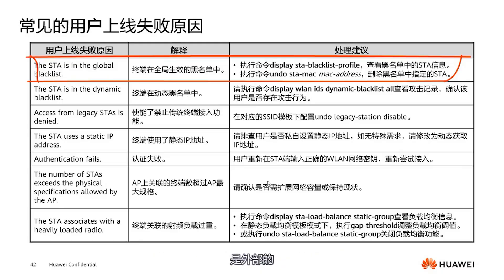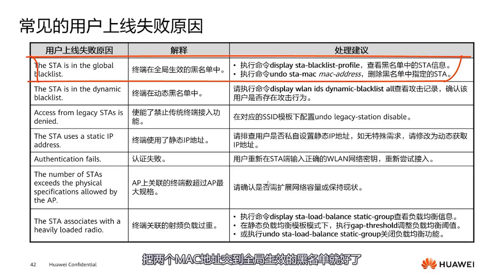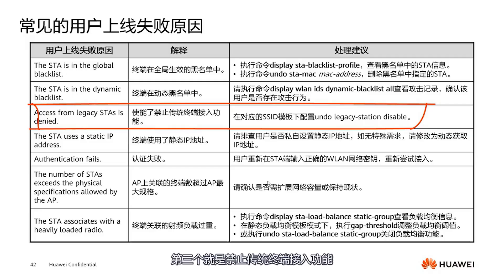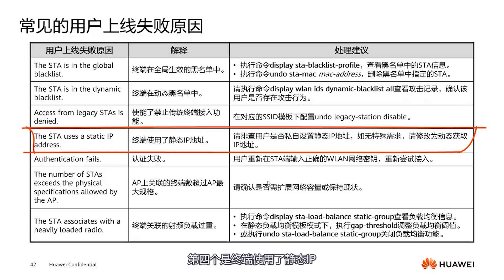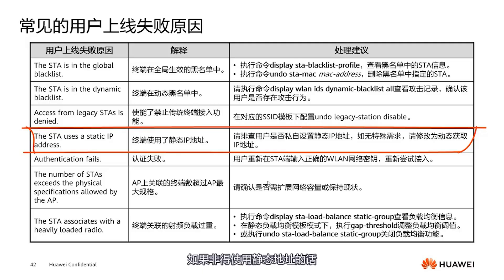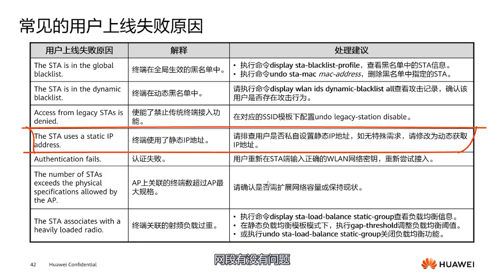The fourth issue is that the terminal uses a static IP address. If the terminal uses a static address without specific requirements, you should still change it to dynamic. If you must use a static address, confirm it carefully — check for any issues with the mask configuration, IP subnet, and ensure there are no address conflicts. Moving on, the next issue is authentication failure, which could be due to incorrect username or password entries.